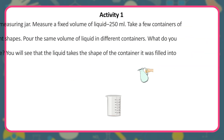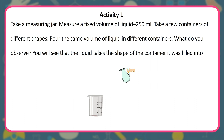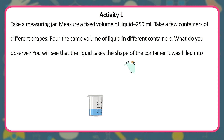Activity 1: Take a measuring jar and measure a fixed volume of liquid — 250 ml. Take a few containers of different shapes. Pour the same volume of liquid into different containers. You will see that the liquid takes the shape of the container it was filled into.